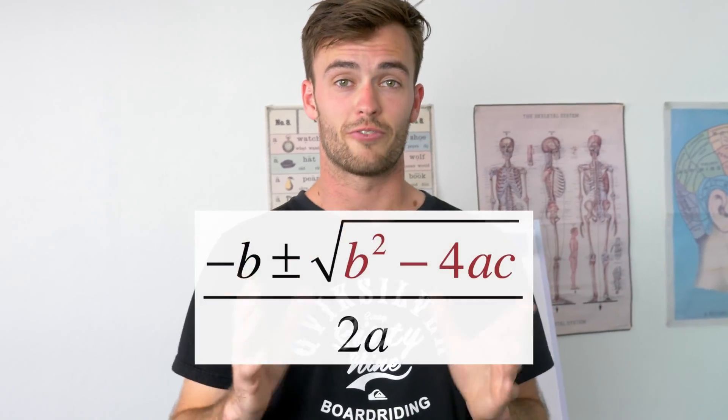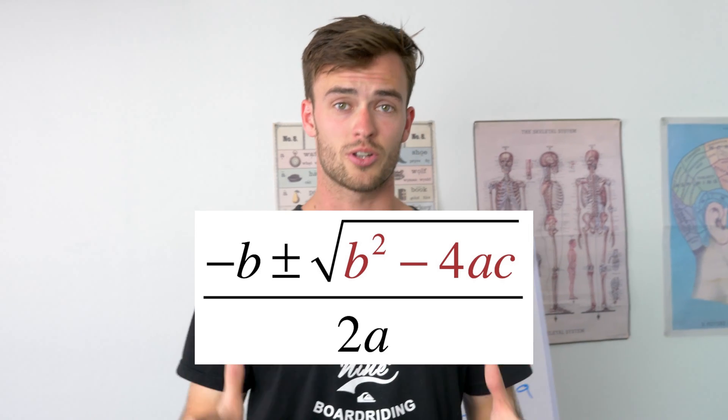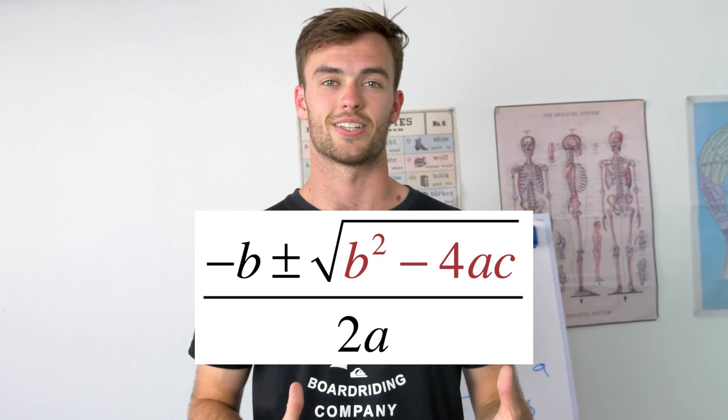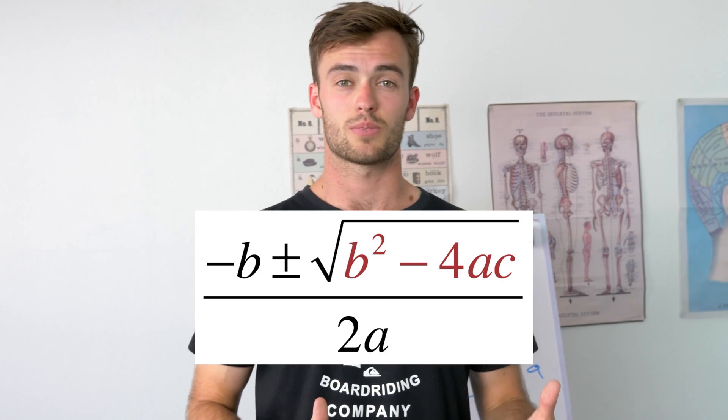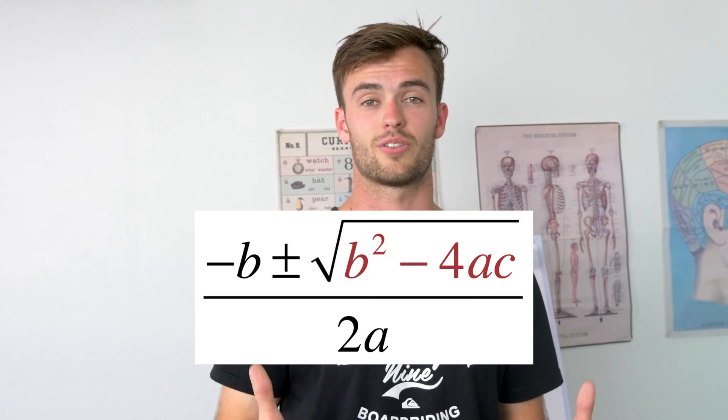Lastly, don't forget about the discriminant formula. This is going to come up and often you can just get an achieved mark by stating whether the discriminant value is greater than or equal to zero.